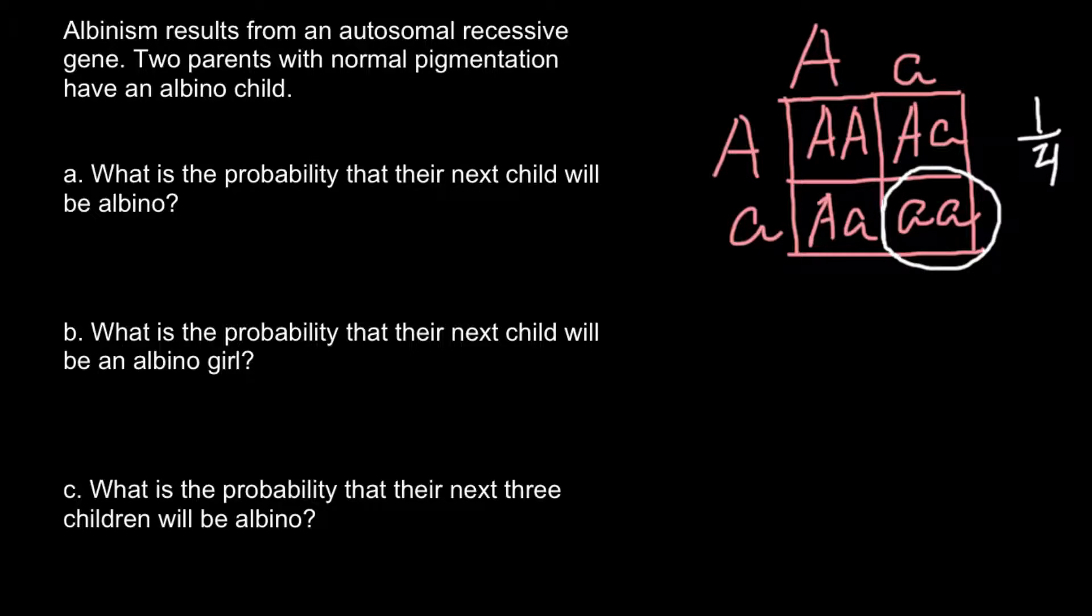In order to answer this question, we also have to know that the probability that the next child would be albino would be 1 fourth, because whatever child this couple has right now, whether it is affected or not affected with this genetic disorder, has no influence on the probability that a following child would have this genetic disorder. So our answer would be 1 fourth, or we can say 0.25 or 25%. All three answers would be correct.